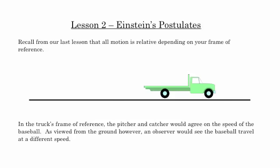All motion is relative depending on your frame of reference. Here we have a truck and some observer standing on the ground. We're going to call the frame of reference where the observer is standing O — that's the stationary frame of reference. The truck is a flatbed truck with two people playing baseball on the back, and we're going to call that O'.